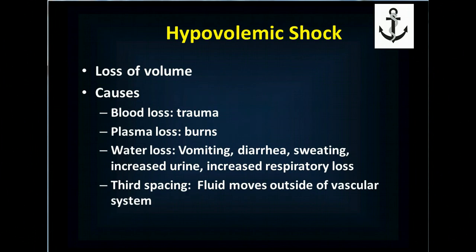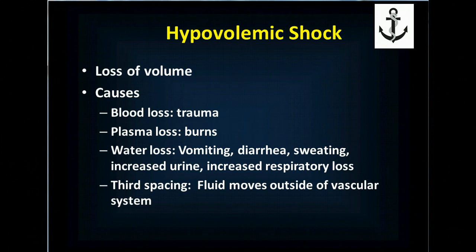In hypovolemic shock, you lose volume — either whole blood with all its components, or just plasma. In trauma, you have whole blood loss. In burns, you lose a lot of plasma. Vomiting, diarrhea, increased urine output, and increased respiratory losses cause free water loss, prompting the body to shift water out of blood vessels — called third spacing — resulting in loss of plasma volume in the bloodstream.